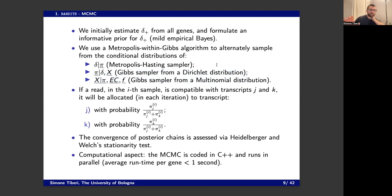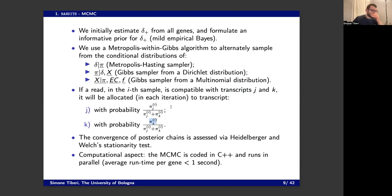For sampling the latent states: assume you have an ambiguous read compatible with transcripts J and K. We compute the relative abundance of transcript J, normalized over the relative abundances of transcripts J and K, and similarly for K. In each MCMC iteration, this ambiguous read is allocated to transcript J with probability proportional to the relative abundance of transcript J, and to transcript K with probability proportional to the relative abundance of transcript K.